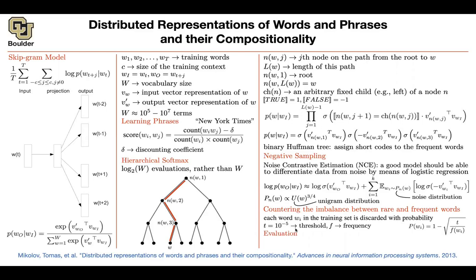How can you tell that a word vector representation is good? Evaluation is very important. There is the task of syntactic and semantic analogies — similar to GRE tests. You ask: 'Berlin is to Germany as France is to what?' and the answer should be 'Paris'. You give this question to your algorithm and see if it can answer correctly. The number of successful answers compared to total questions gives you a metric to evaluate the quality of your algorithm.